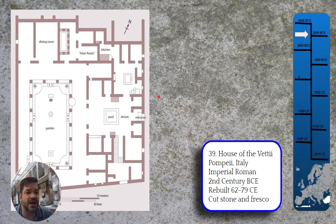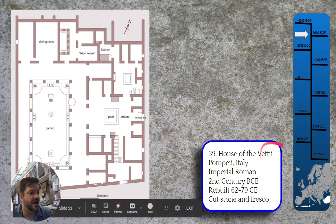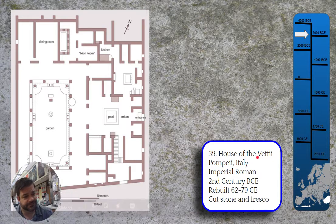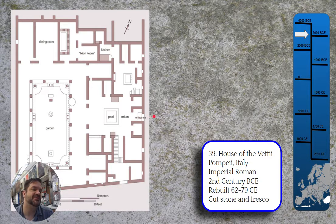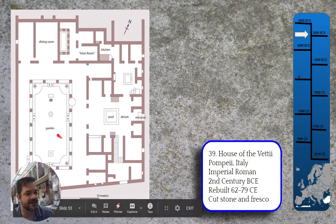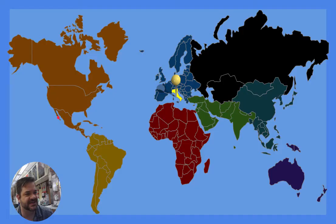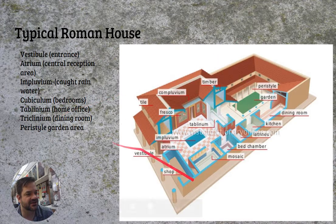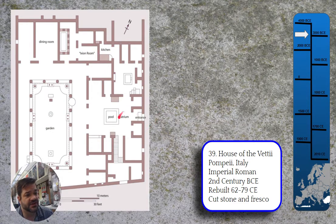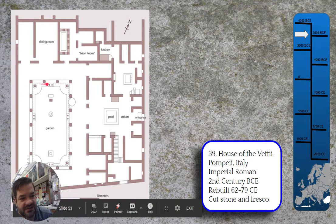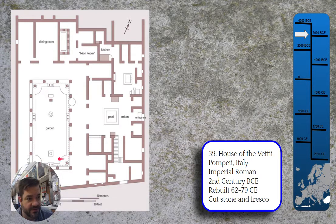The house we're going to look at is called the House of the Vettii, owned by two brothers in Pompeii. It was an older villa that they rebuilt — just in time for it to get wiped out by the volcano. We have our entrance, atrium, impluvium, and then the peristyle garden in the back. It's a little more complicated than a simple rectangle. The house of the Vettii.